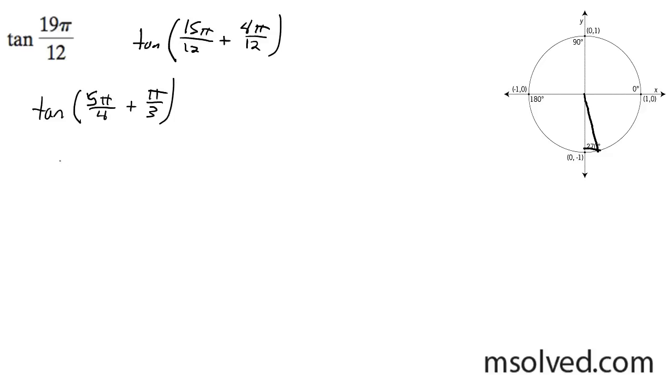So adding these together we get tangent of 5π over 4 plus tangent of π over 3, all over 1 minus the tangent of 5π over 4 times the tangent of π over 3.